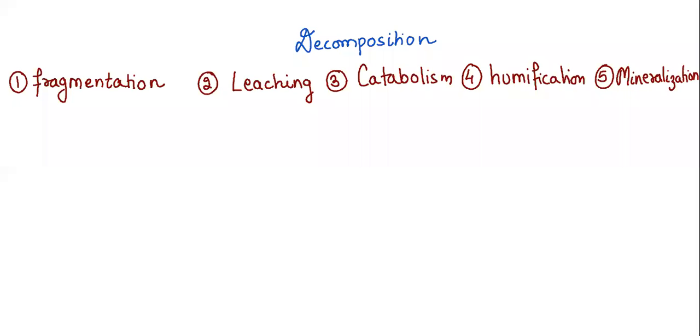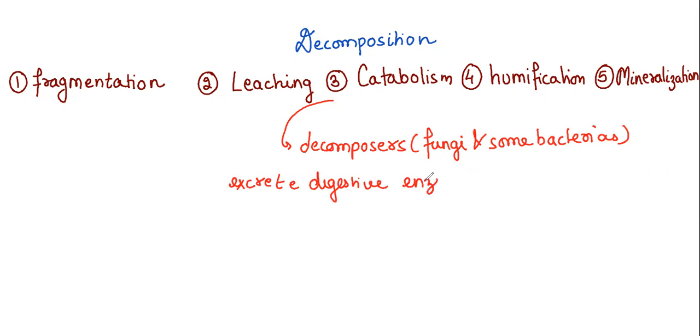Coming to catabolism. Here, what actually happens is decomposers, these are the agents which convert the detritus into the fertile nutrients. Basically, it involves fungi and some bacteria. These decomposers, we can say that they excrete digestive enzymes over detritus small particles.